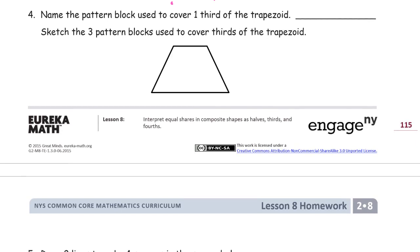Name the pattern block used to cover a third of the trapezoid. Now the trapezoid has, if you use three of those green triangles, let me use a straight edge for this and it will come out right.